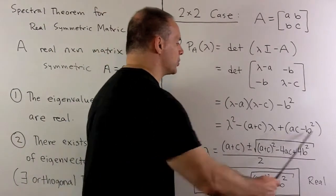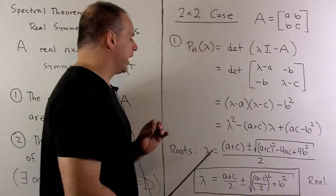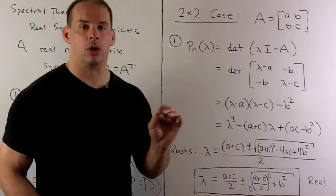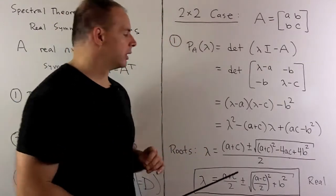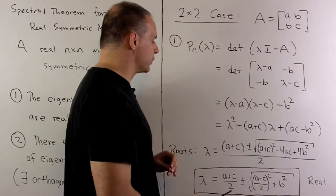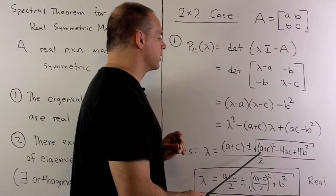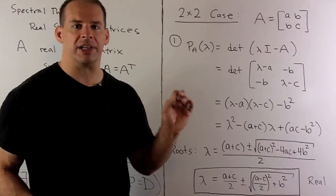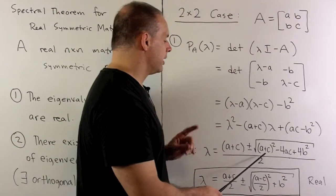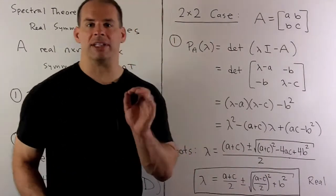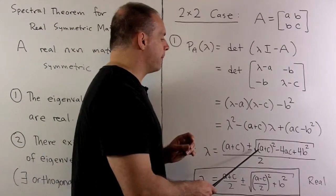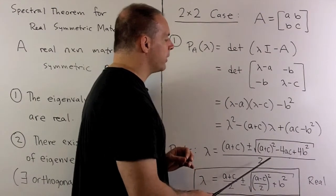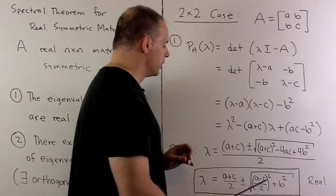To find the eigenvalues, we find the roots of this polynomial using the quadratic formula. We get lambda equal to (A plus C) plus or minus the square root of (A plus C) squared minus 4AC plus 4B squared, all over 2. Simplifying, we split into two terms: (A plus C) over 2, and then expanding (A plus C) squared gives A squared plus 2AC plus C squared. Combining with minus 4AC gives (A minus C) squared. Pushing the 2 into the square root gives a denominator of 4, yielding (A minus C) over 2 quantity squared plus B squared under the root. So here we have our two roots.